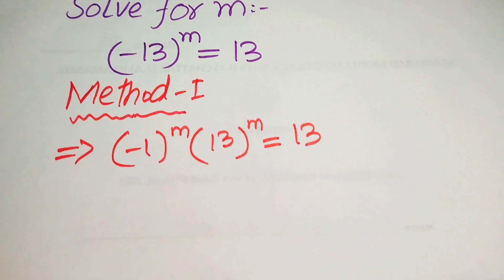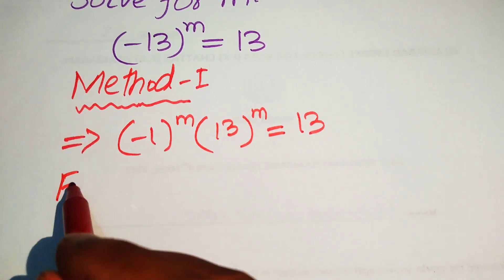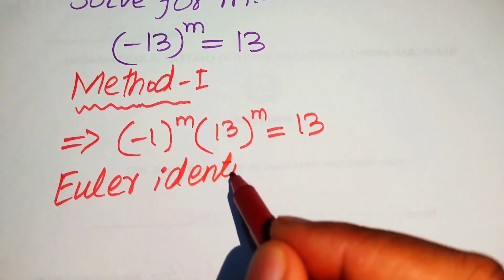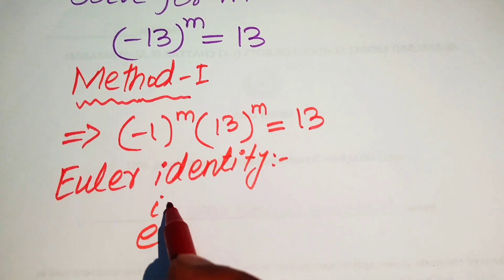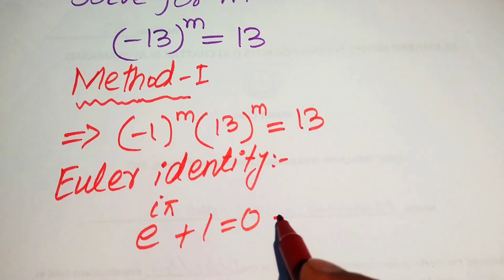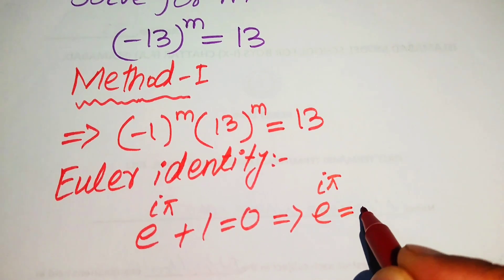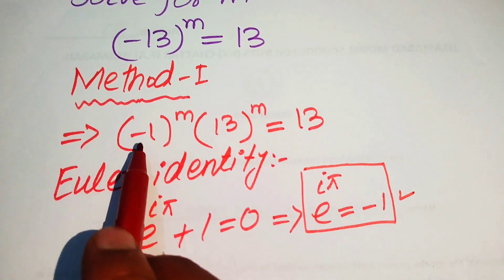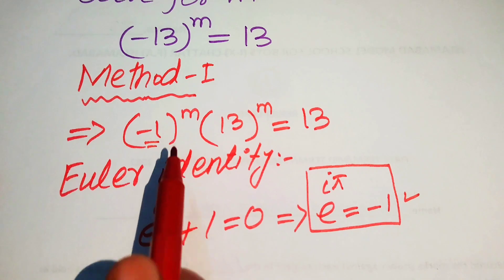Next, we apply Euler's identity. Euler's identity states that e^(iπ) + 1 = 0, which implies that e^(iπ) = -1. We now substitute this value of -1 into the equation, replacing -1 with e^(iπ).